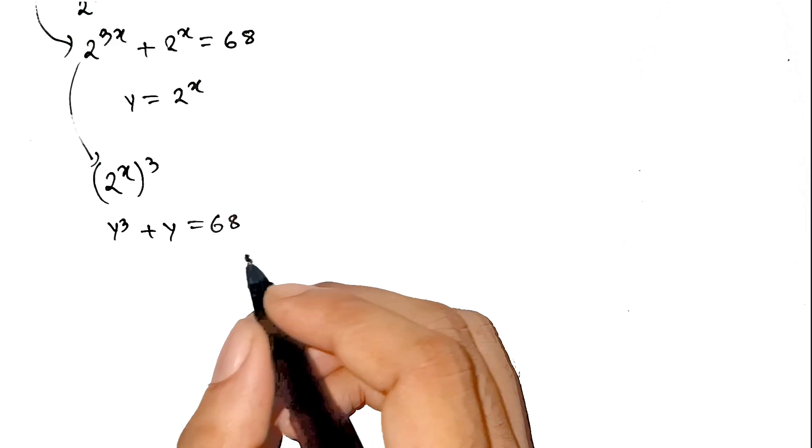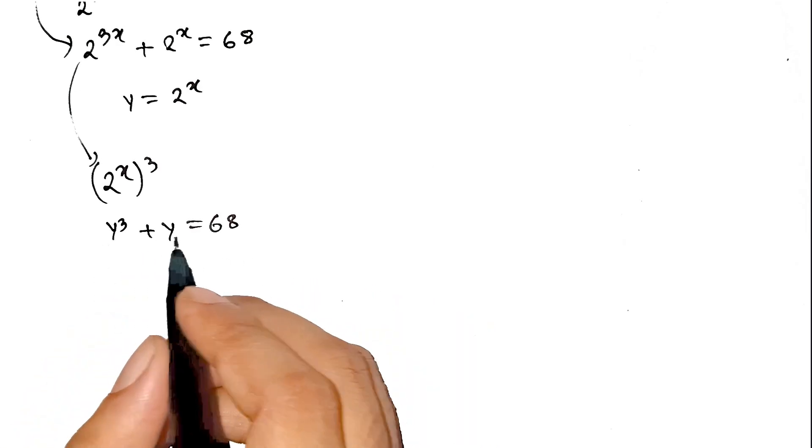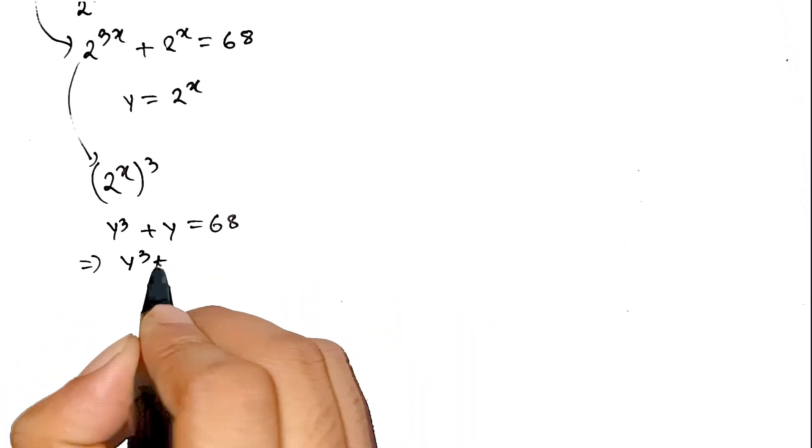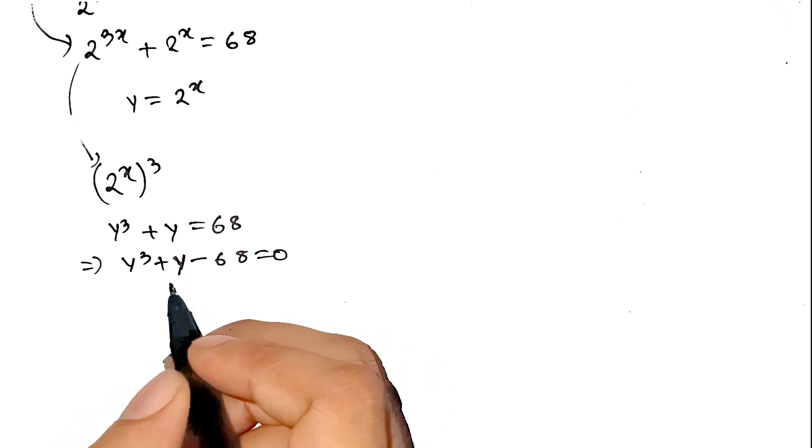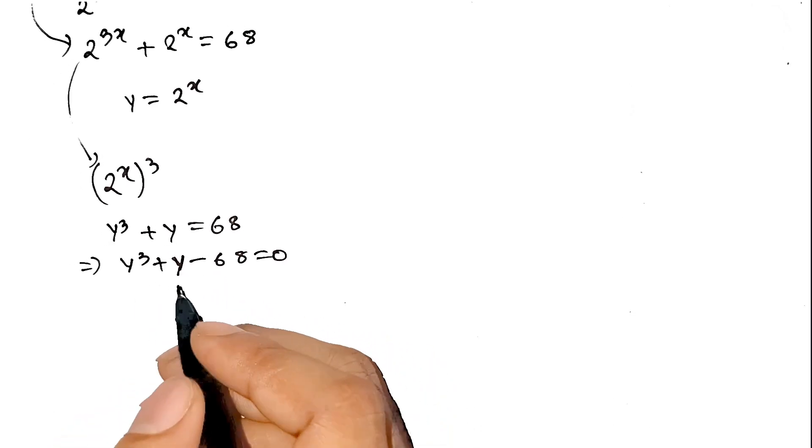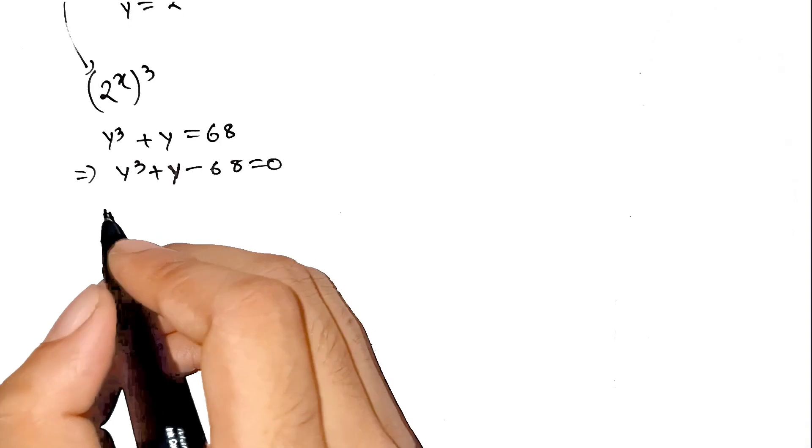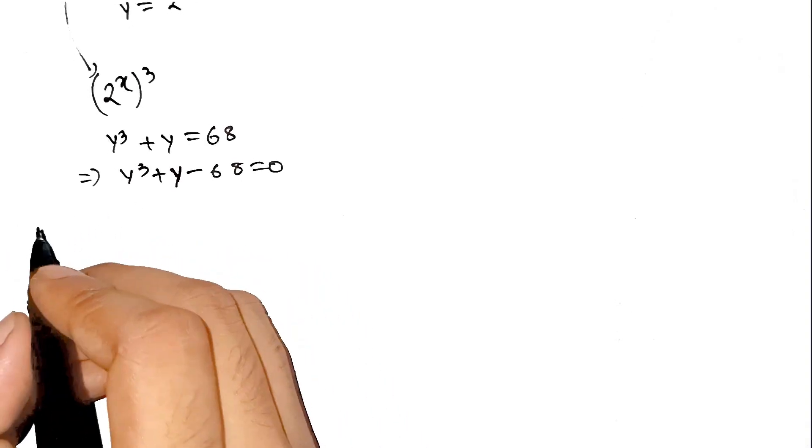Now come to the point. We've got y^3 + y - 68 = 0. This is a cubic. Cubics are usually the dark souls of algebra. Painful. But don't worry. We can try small integer values. This is the fun part. Guessing. Yeah, math actually lets you guess sometimes.